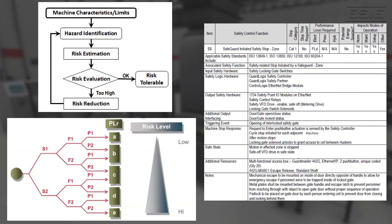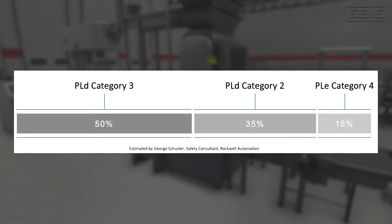Rockwell did a market assessment to understand the category and performance levels for the machinery being designed and installed in industry in order to understand the SIL ratings needed for the equipment they provide. The result of the estimation was 85% of machinery needs to achieve a performance level D and not performance level E, which is the highest safety rating. Therefore, if the end goal is to achieve a specified performance level, we need to design the system based on the category and SIL components.